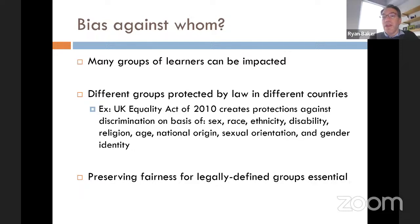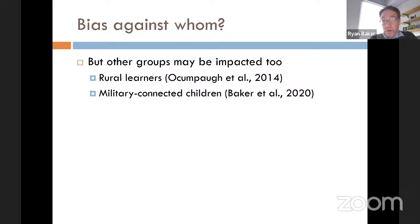Educational algorithms often make systems more effective and lead to better outcomes, but these better outcomes can be unevenly distributed. We need to ensure it works for all legally protected groups and beyond, because other groups may be impacted too. For example, Ocampo et al. showed that educational technologies can be less effective for rural learners, who are often not protected under law.